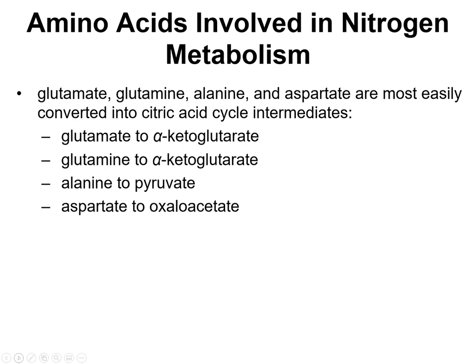Glutamate, glutamine, alanine, and aspartate are most easily converted into citric acid cycle intermediates. This has to do with transferring that amino group to something else, and then with a little chemistry or rearranging, you can easily go from these amino acids to citric acid cycle intermediates, which will help fuel production of universal electron donors that shuttle electrons through the respiratory chain and ultimately help with ATP production.